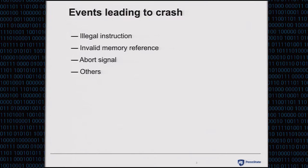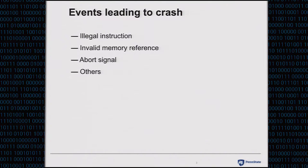When your program crashes, some abnormal events must have happened. In fact, there is a set of events which may lead to a crash. For instance, when an illegal instruction is executed, your CPU will be interrupted and your program will crash. When invalid memory is referenced, a page segmentation fault will arise and your program will crash. When your program receives an abort signal, the program will also crash.